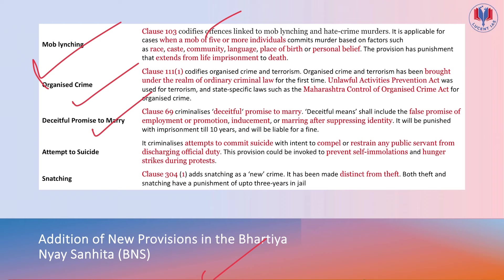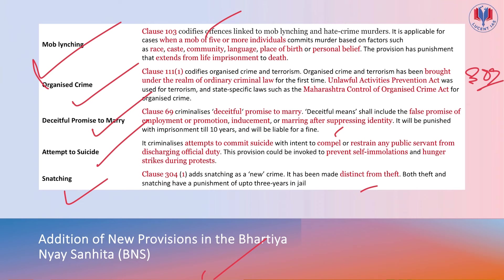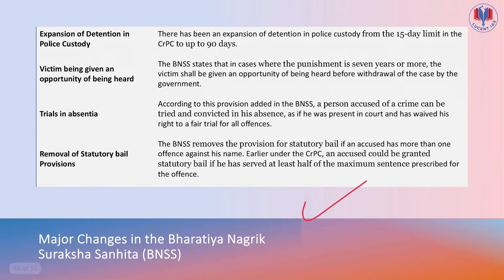Organized crime is covered under Clause 111, Sub-clause 1. Clause 69 also deals with deceptful promise of marriage. Section 309 — attempting to commit suicide with intent to compel or restrain any public servant from discharging official duty — is retained. Snatching under Clause 304, Sub-clause 1 has been made distinct from theft. These are the new crimes under the Bharatiya Nyaya Sanhita.